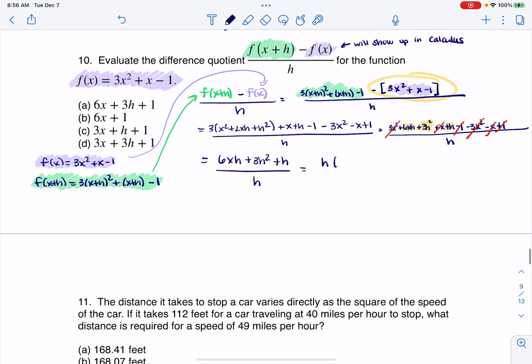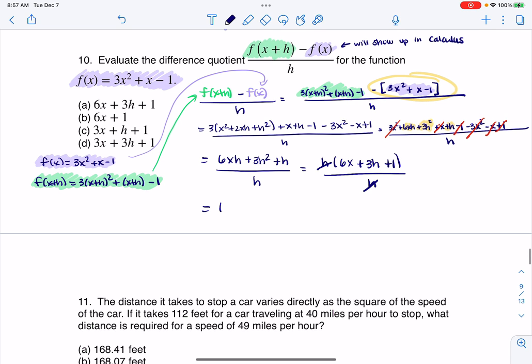And that leaves me with 6x plus 3h plus 1, so that's the most I can simplify it. Let's start looking at the answers and see if we can spot it, and actually, I see it right there. There is my solution, so I found that difference quotient.